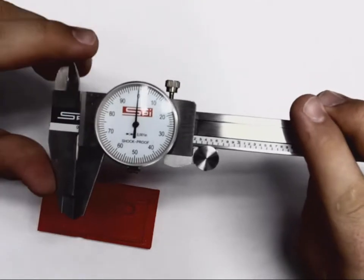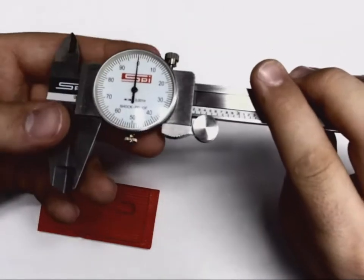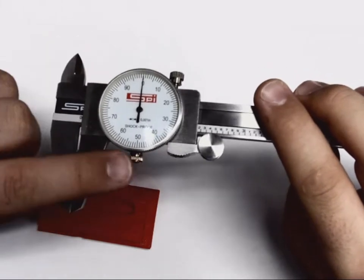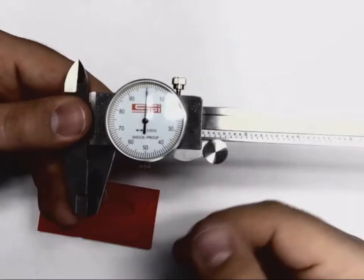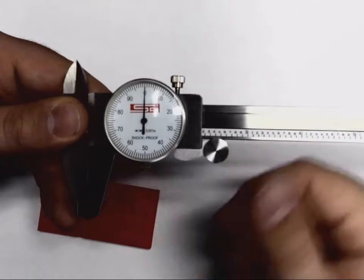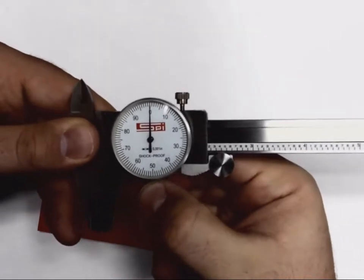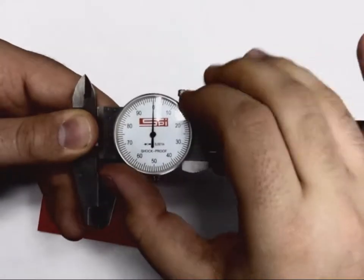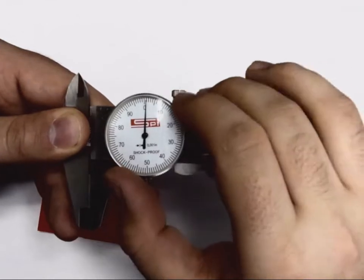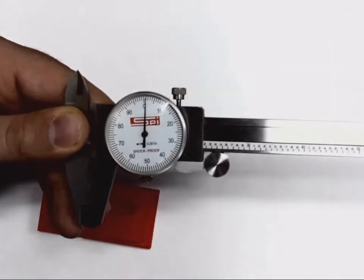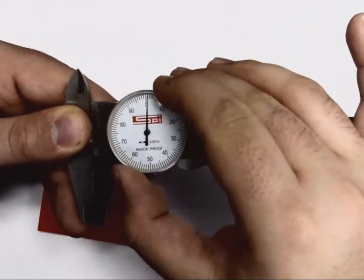If you ever need this for future reference, the knob on the bottom of the dial is the dial lock knob. If I turn it to the left, when I close this down, if I'm not reading at zero, if I turn this to the left it'll loosen. And I'm going to actually physically turn my dial. If I'm reading a little bit off of zero, I can actually turn my dial.